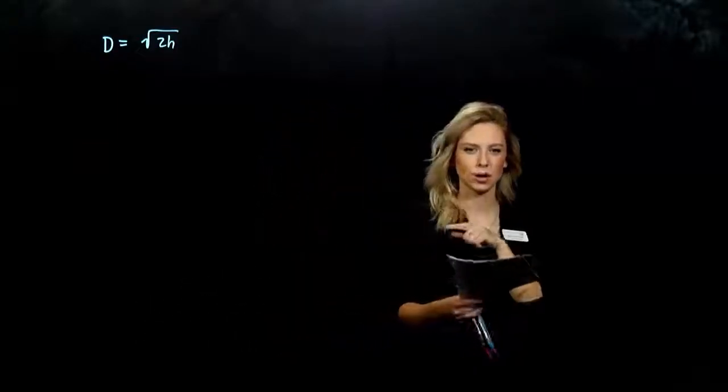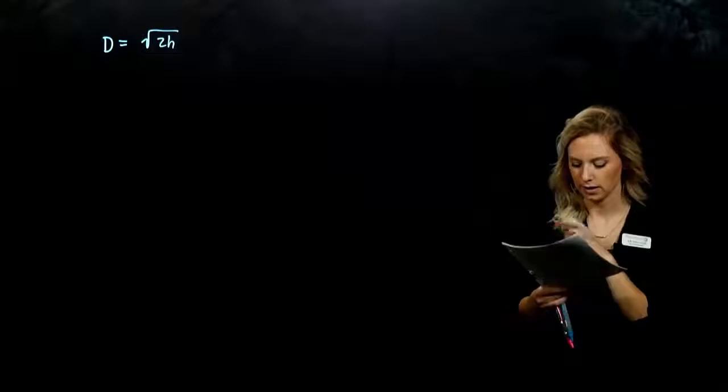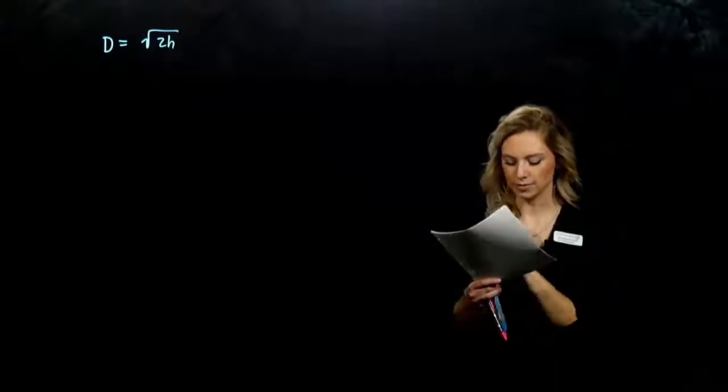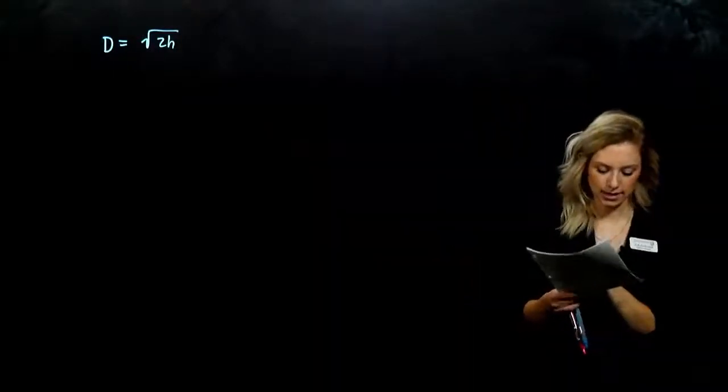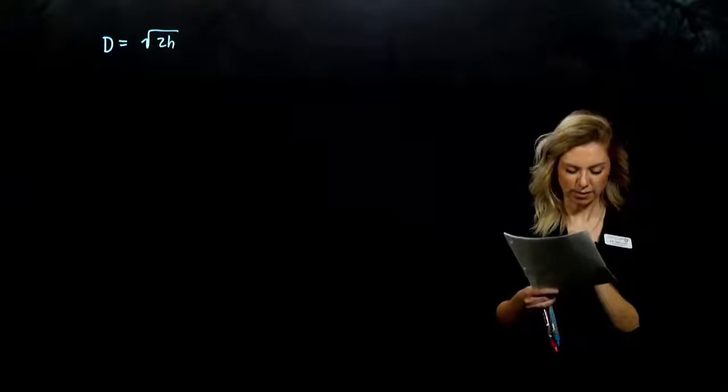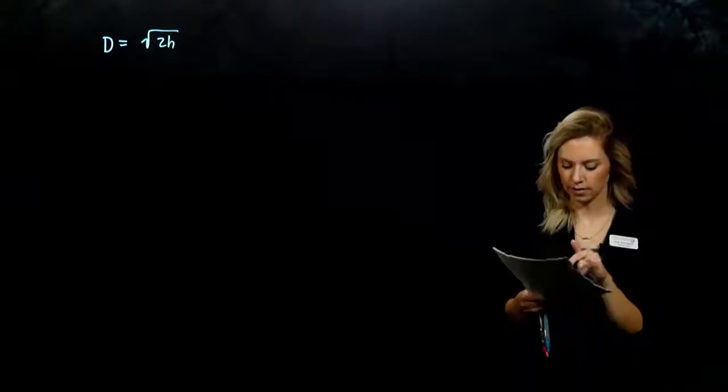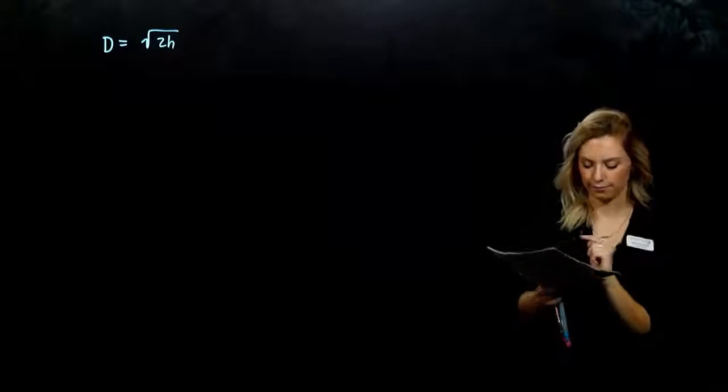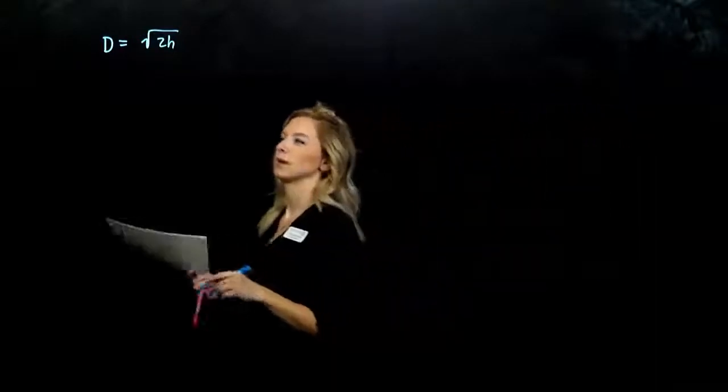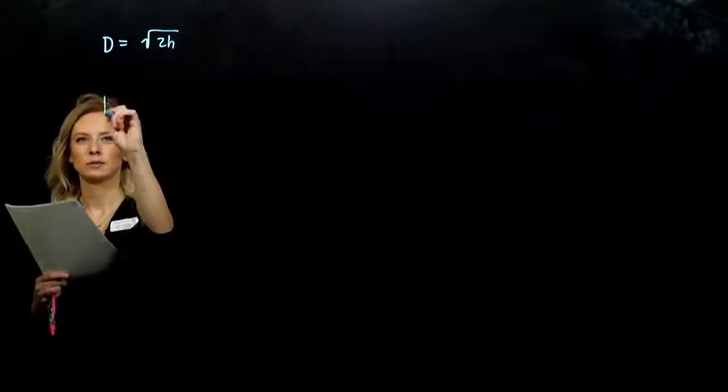So we're actually going to use this equation, this radical equation, because it can be used to approximate the distance, d in miles, that a person can see to the horizon from a height, h in feet. So to kind of give a picture to this thing, what's happening?